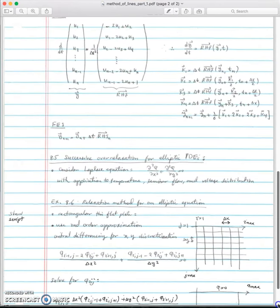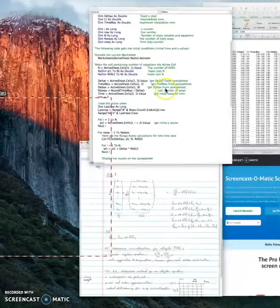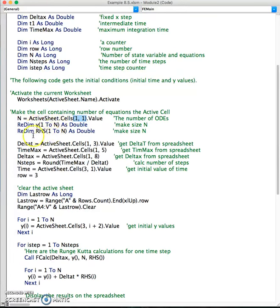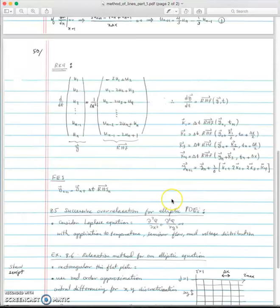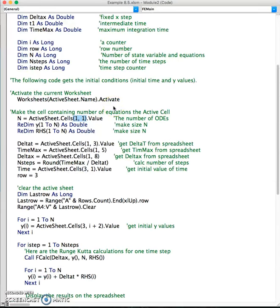The y vector we're talking about has n elements from u1 to un, and the right-hand side also has n elements. That's why we have y from 1 to n and right-hand side from 1 to n. N is the number of discretized points within the domain that does not include the boundary points. If this is the discretization from left boundary to right boundary, we have n intermediate points plus two boundary points, so total n plus 2.